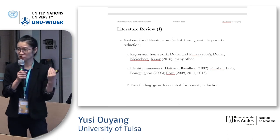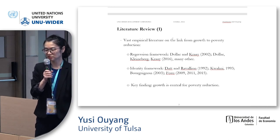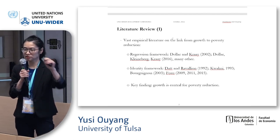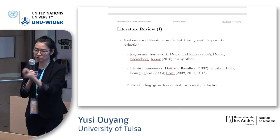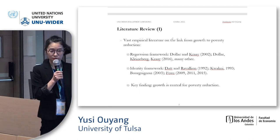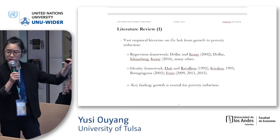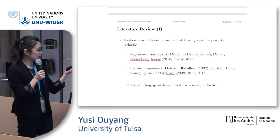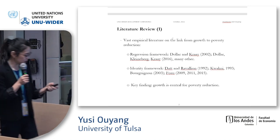Another strand of literature is the analytical framework based on the identity model — going back to Datt and Ravallion in 1992, Kakwani in 1993, and then popularized by Professor Bourguignon in 2003, who proposed an analytical identity where poverty reduction is due to a change in mean income and also a change in distribution. Both strands, despite their different approaches, came to the conclusion that economic growth is of central importance for poverty reduction.